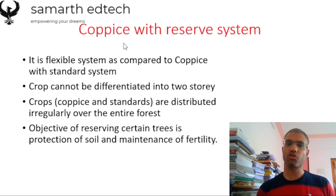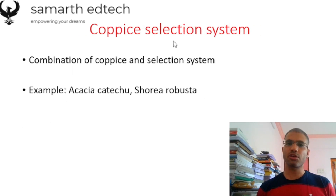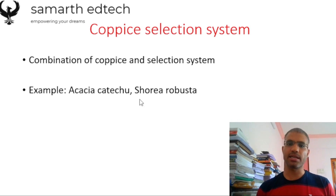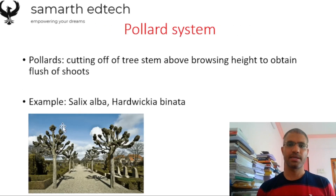The Coppice Selection System is again a combination of the coppice and selection system. If you haven't seen the selection system, access the playlist and watch the video from there. Examples of this system are Acacia catechu and Shorea robusta.